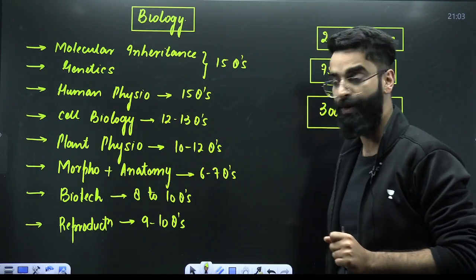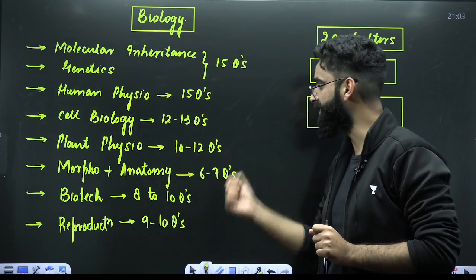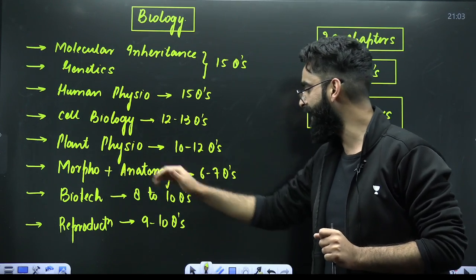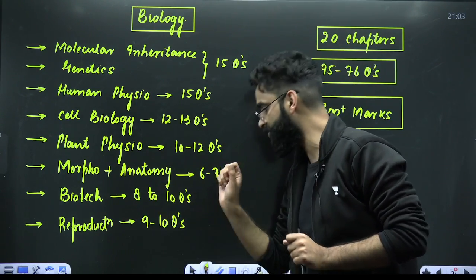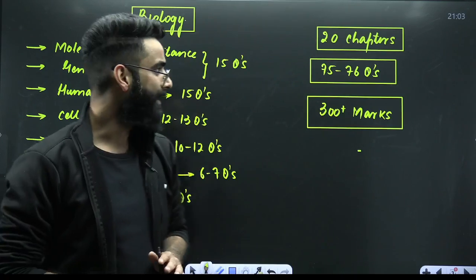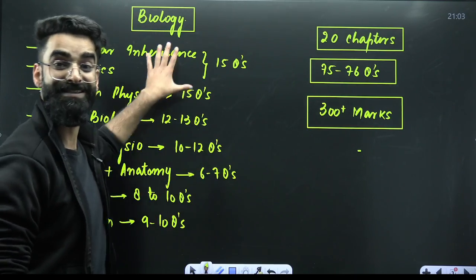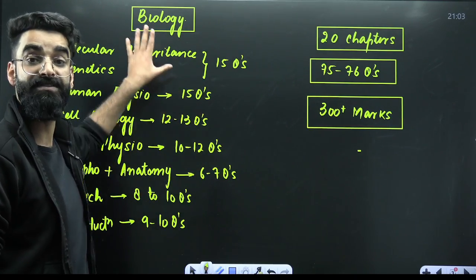Cell biology, 12 to 13 questions. Plant physiology, 10 to 12 questions. Morphology and botany, 6 to 7 questions. Biotech, 8 to 10 questions. Reproduction, 9 to 10 questions. So in total, these are 20 chapters approximately.